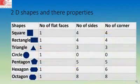2D shapes and their properties. Square has one flat face, four sides and four corners. Rectangle has one flat face, four sides and four corners. Triangle has one flat face, three sides and three corners.